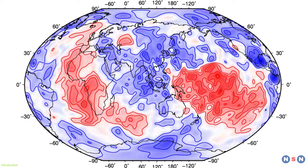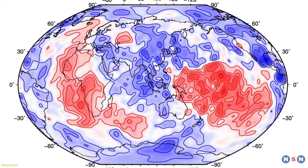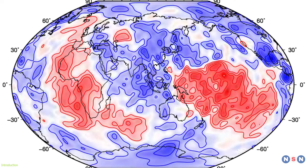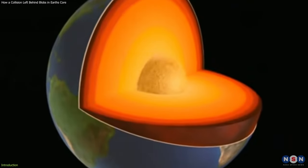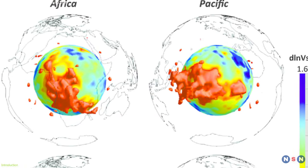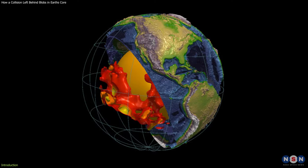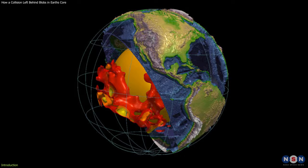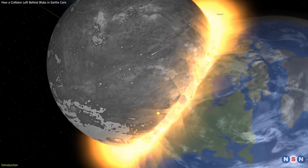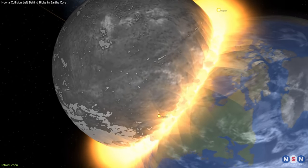These blobs are called Large Low-Velocity Provinces, or LLVPs, and they are two massive structures deep within the Earth's mantle, one beneath Africa and the other beneath the Pacific Ocean. The theory proposes that these blobs are remnants of Theia that sank into the Earth's mantle and solidified into the LLVPs.